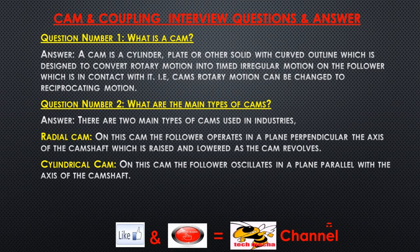Question number one: What is a cam? Answer: A cam is a cylinder, plate, or other solid with a curved outline which is designed to convert rotary motion into timed irregular motion on the follower which is in contact with it. That is, a cam's rotary motion can be changed to reciprocating motion.